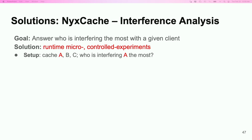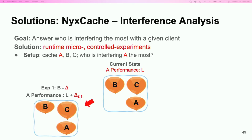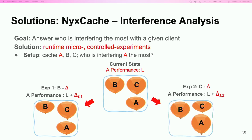NixCache achieves these goals through the idea of runtime micro-controlled experiments. Consider a system with three caches A, B, and C, where we are interested in interference analysis for cache A. Currently A has latency L, and the balloons represent the interference pressure each cache puts on the others. NixCache will first throttle B by a certain amount and then measure the effect on cache A as delta L1. Then NixCache will repeat the experiment but with cache C throttled this time, with the same throttle amount across both experiments.